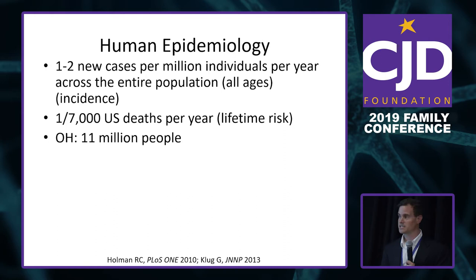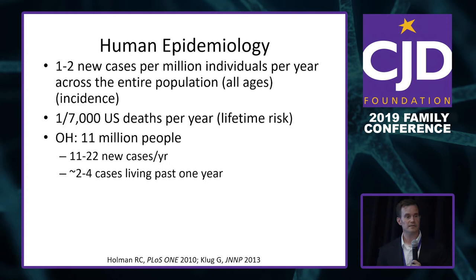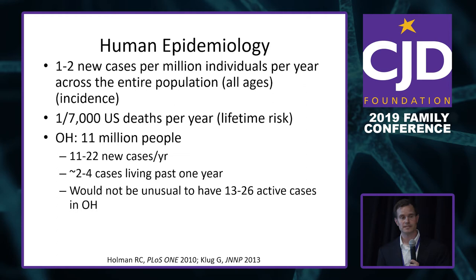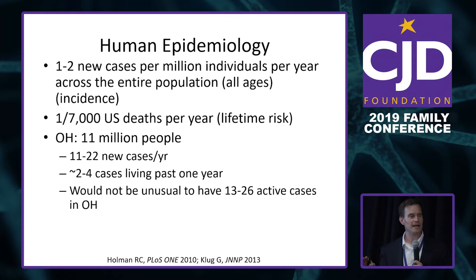Taking Ohio as an example — 11 million people — we'd expect 11 to 22 new cases of prion disease every year. About 20% live longer than a year, so that adds two to four ongoing cases, meaning 13 to 26 active cases of prion disease in Ohio at any one time. For advocacy purposes, we tend to use the one in 7,000 U.S. deaths statistic rather than the one in a million number.